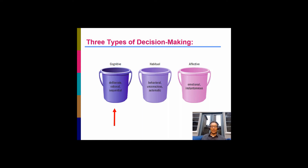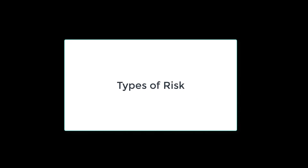The first type we want to talk about is cognitive decision-making. When you're purchasing products or services, your thought process — whether it's fully rational or not — is that you believe you're making some type of analysis, some type of rational decision-making in the process of making a purchase. There's a sequence to your rational decision-making and we're going to focus on this one first.